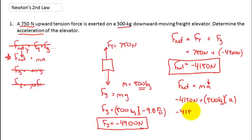We have negative 4,150 Newtons divided by 500 kilograms gives me an acceleration of negative 8.3 meters per second squared.